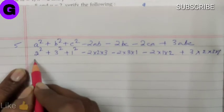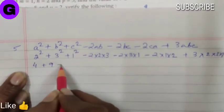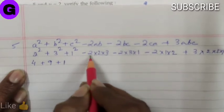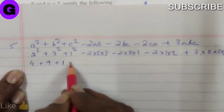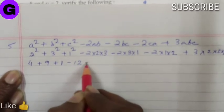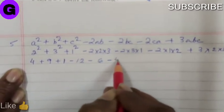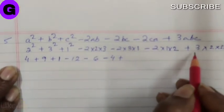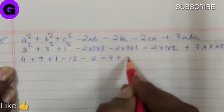2² is 4, 3² is 9, 1² is 1; minus 12, minus 6, minus 4, plus 18.